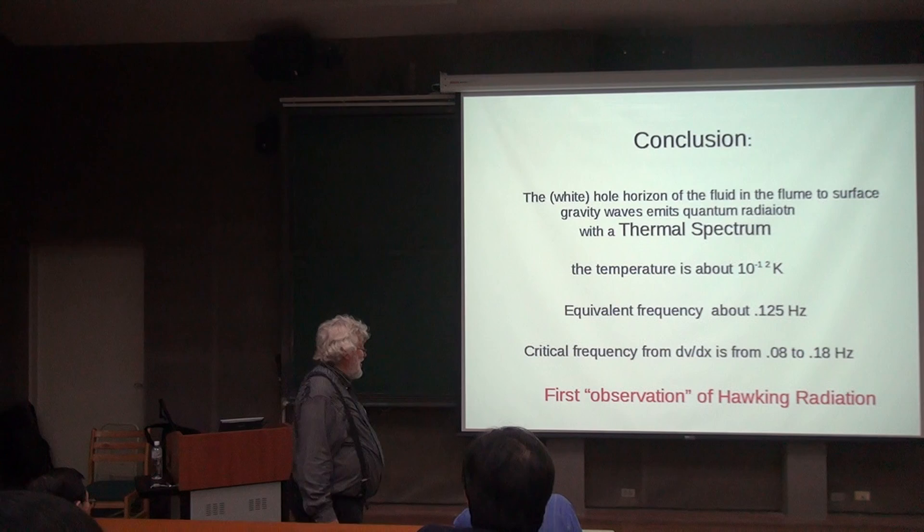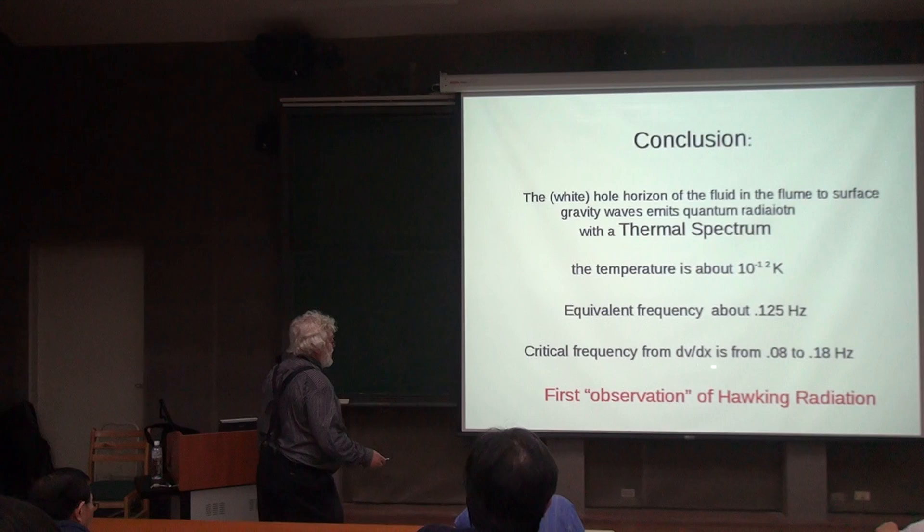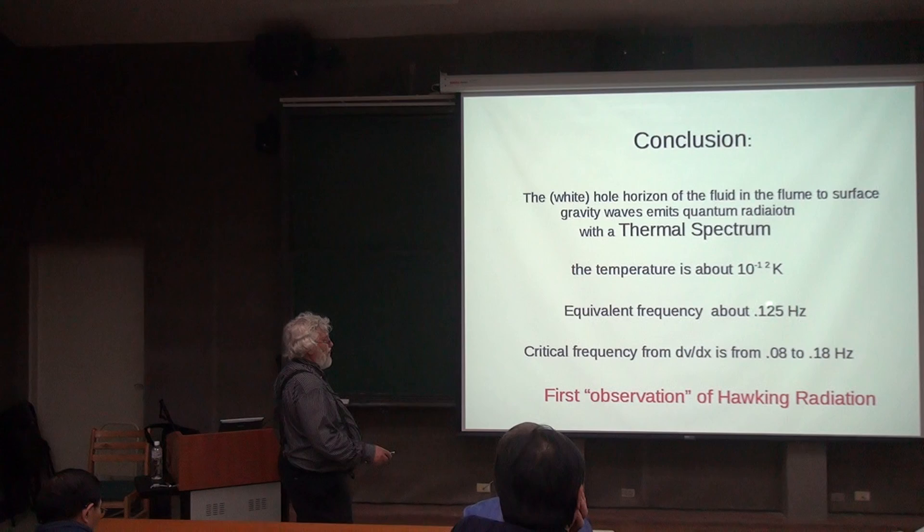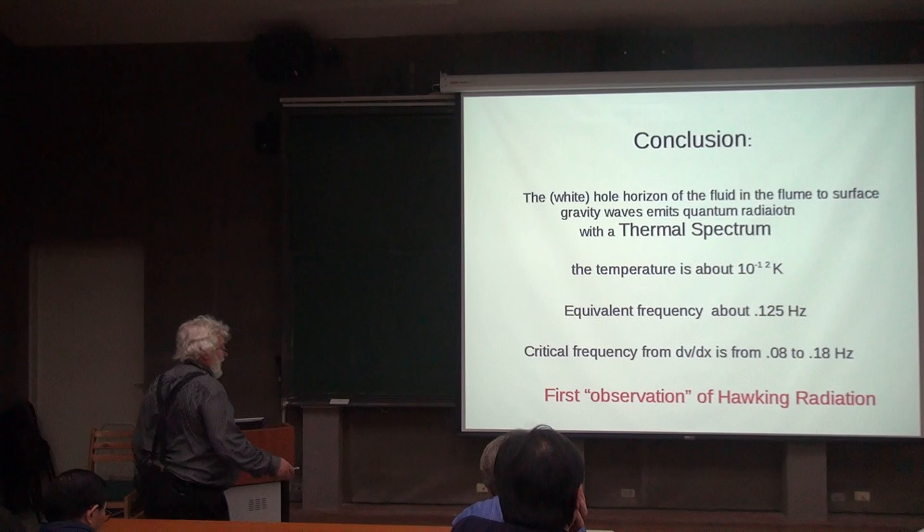So the critical frequency, i.e., that came from dV by dx, the derivative of C squared minus V squared, is somewhere between 0.08 and 0.18 Hertz. What we measured for that slope of the line was 0.125 Hertz. And I think that's pretty good agreement.